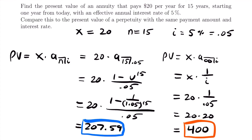Imagine how large this value would be for $20 per month or $100 a month — good perpetuities cost a lot. That's all for this lesson on perpetuities. If you want to see more examples, check out the examples video linked at the end and in the description below. If you have any questions, leave them in the comments. I'll see you next time.